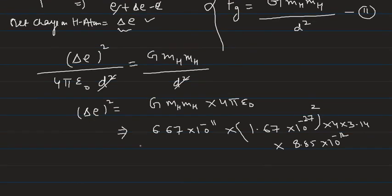So when you solve this value, you will get (Δe)². So we need Δe. So finally, when we solve it, Δe value is like approximately 2.06×10⁻³⁷.